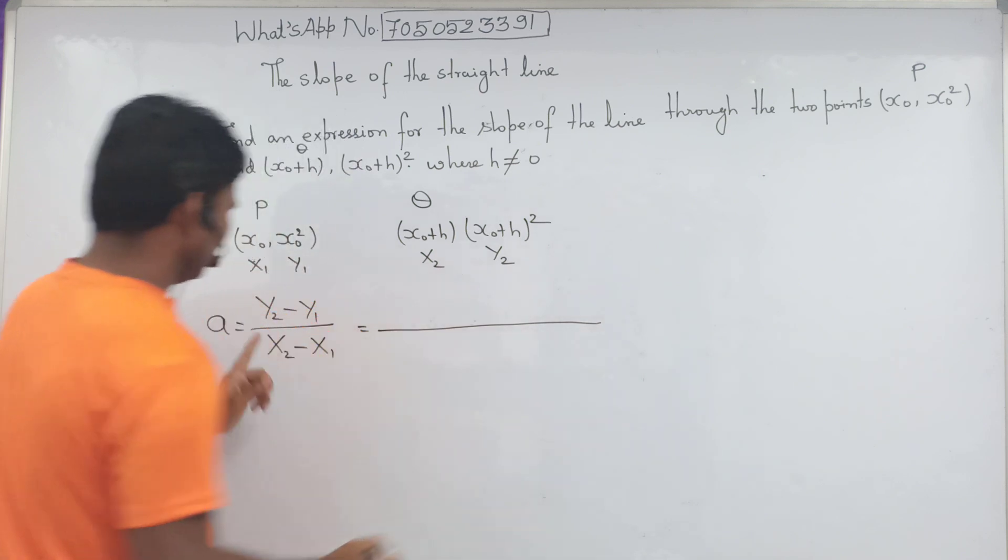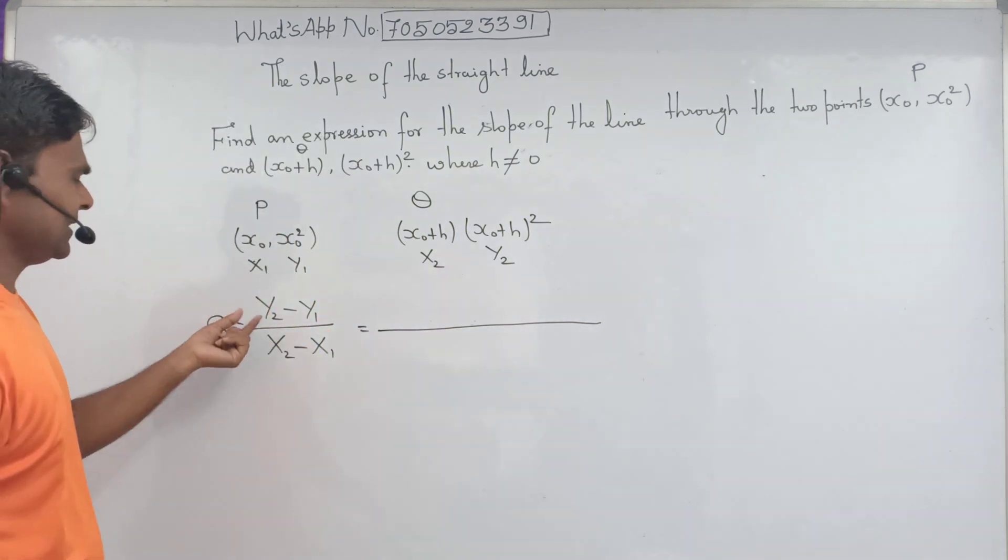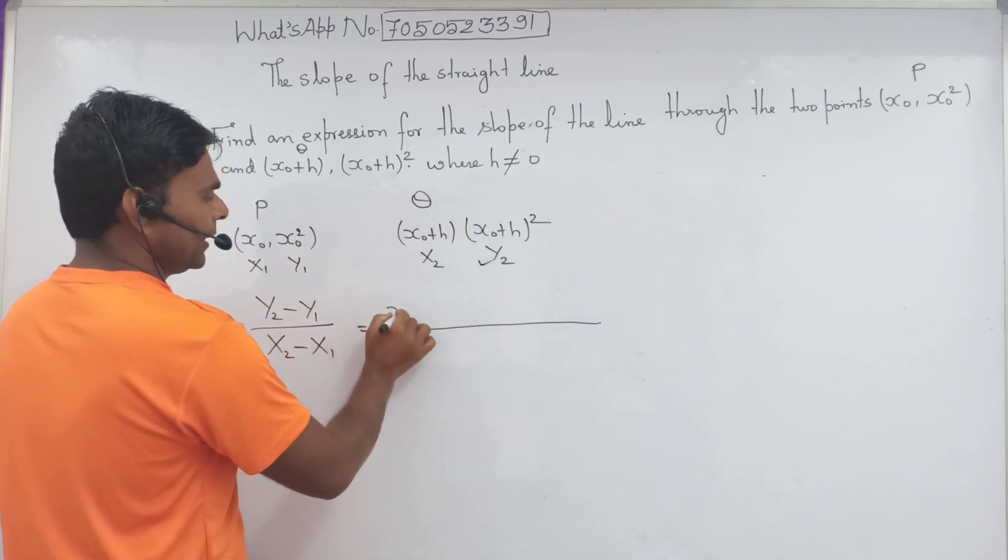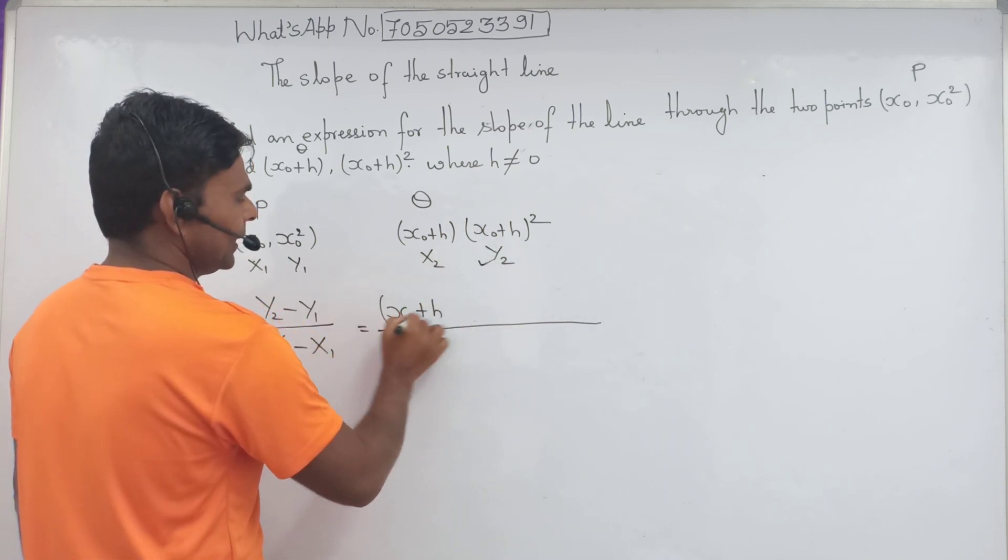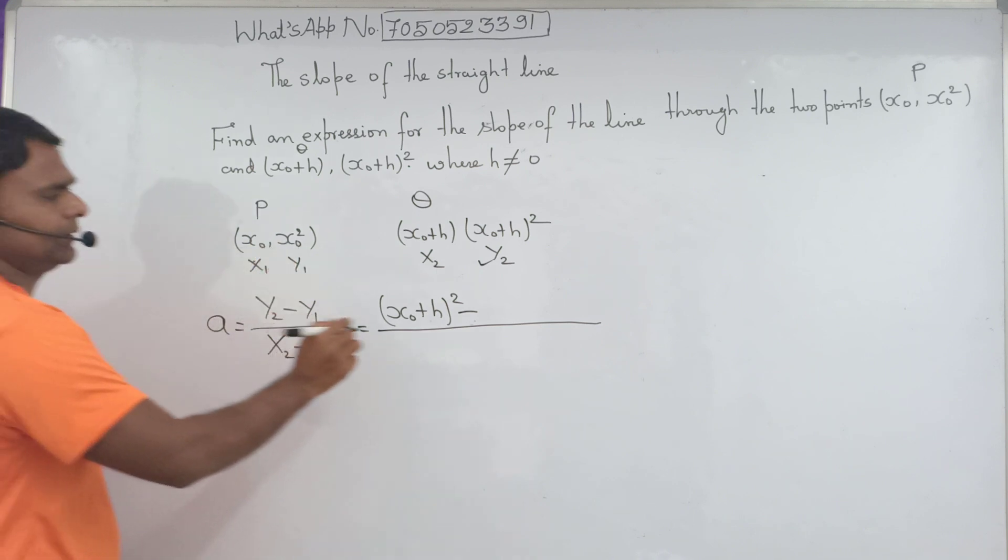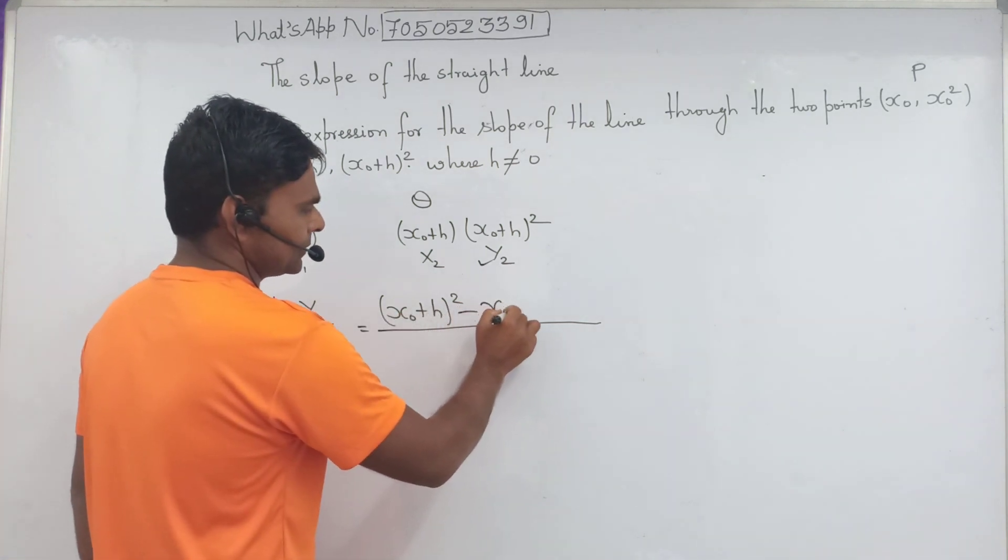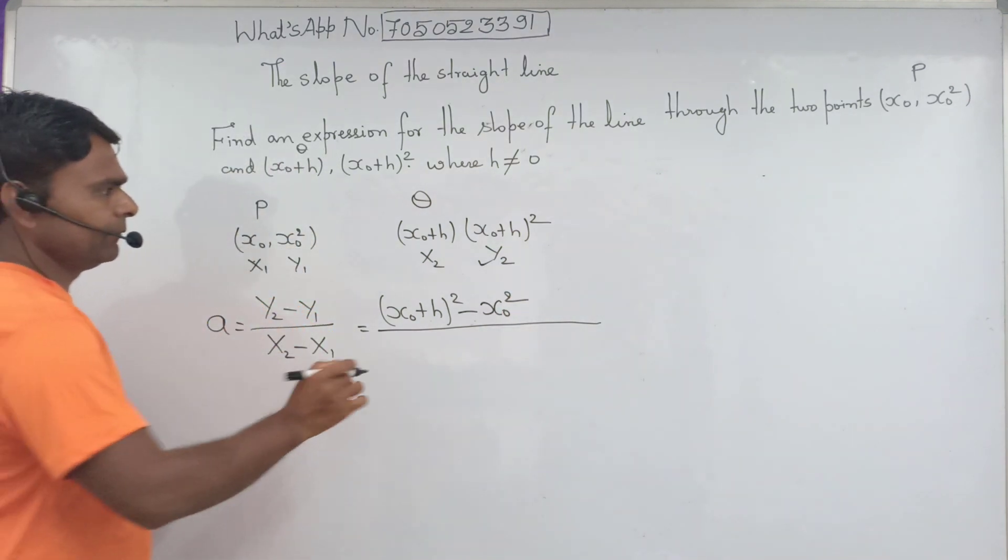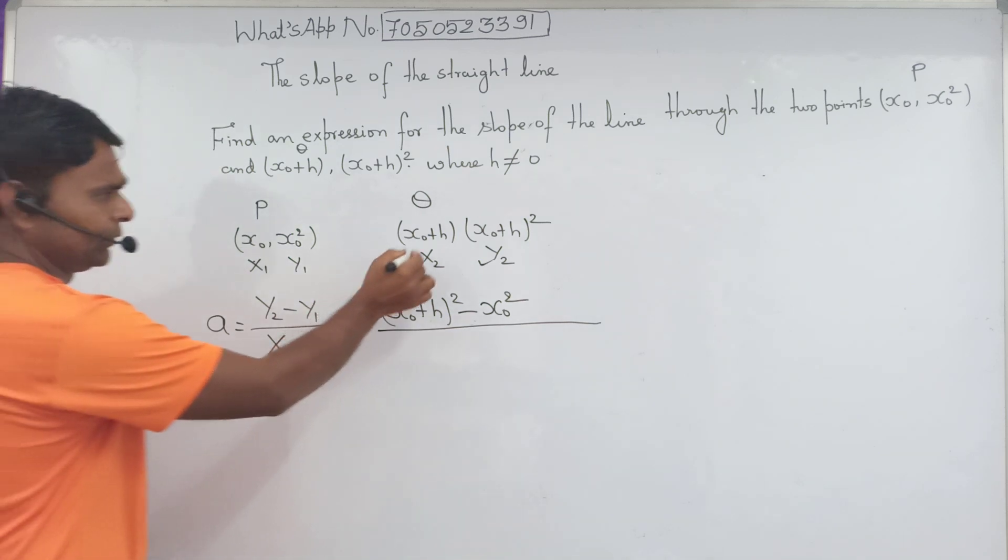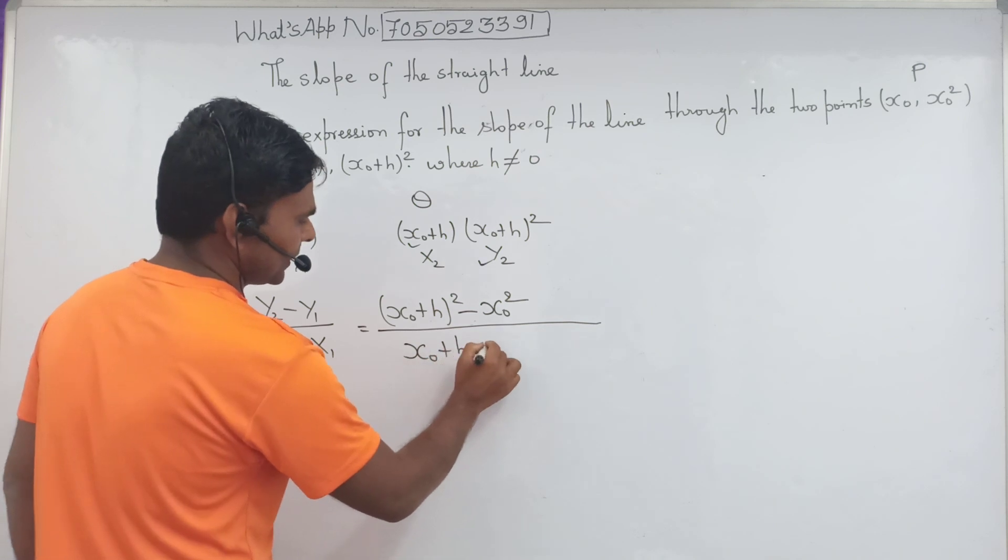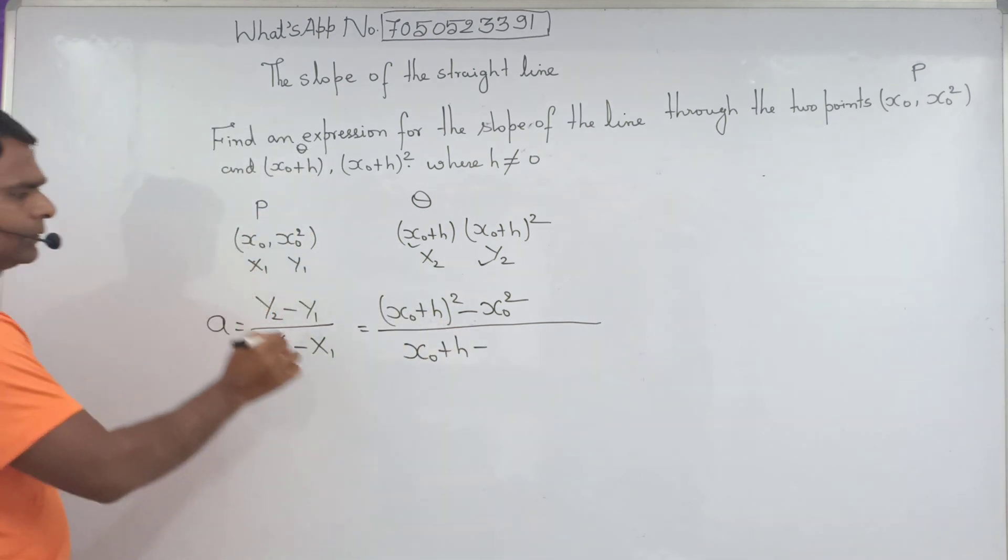What is the value given for y2? Equal to x0 plus h, x0 plus h square, minus, by formula by default, y1. y1 is given x0, x0 square. Now it is time for putting the value of x2. x2 is given here: x0 plus h minus x1 equal to x0.